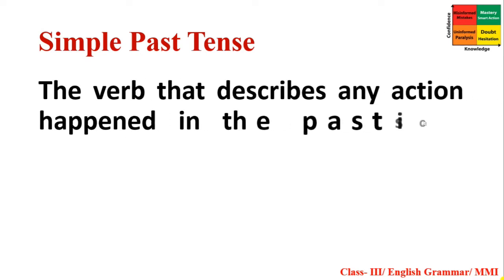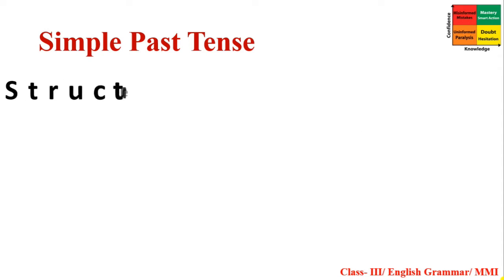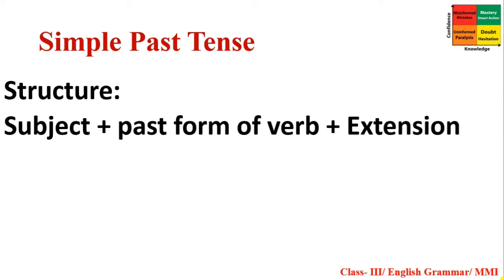The verb that describes any action that happened in the past is called Simple Past Tense. The structure is: subject plus past form of verb plus extension. For Simple Present Tense, the structure was: subject plus present form of verb plus extension.